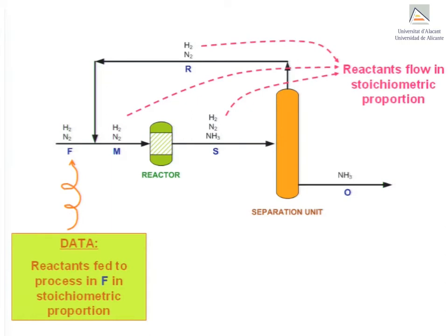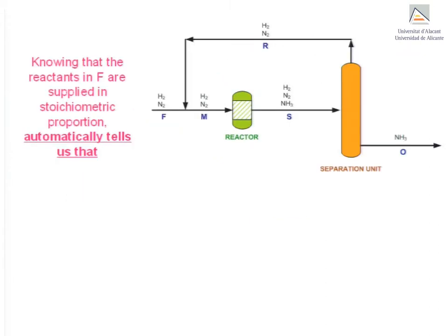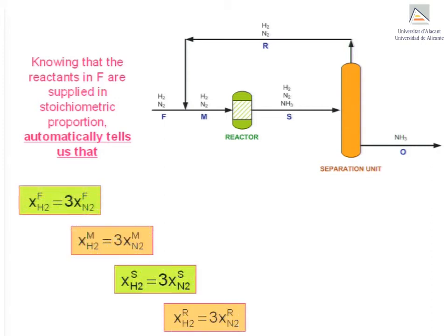Finally, the nitrogen and hydrogen in stream M are also in stoichiometric proportion. Based solely on the knowledge that stream F supplies nitrogen and hydrogen in stoichiometric proportion, we can automatically say that the molar fraction of hydrogen is 3 times that of nitrogen in streams F, M, S and R.